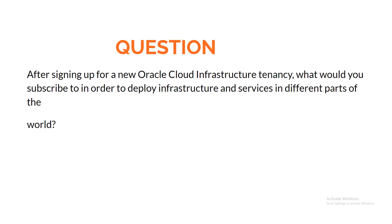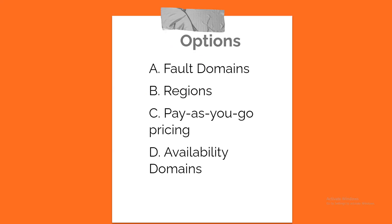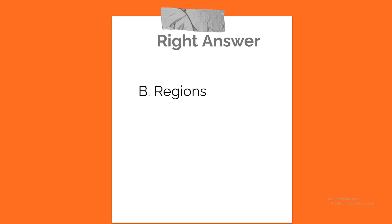Question. After signing up for a new Oracle Cloud Infrastructure tenancy, what would you subscribe to in order to deploy infrastructure and services in different parts of the world? A. Fault Domains. B. Regions. C. Pay-as-you-go pricing. D. Availability Domains. Correct answer: B. Regions.